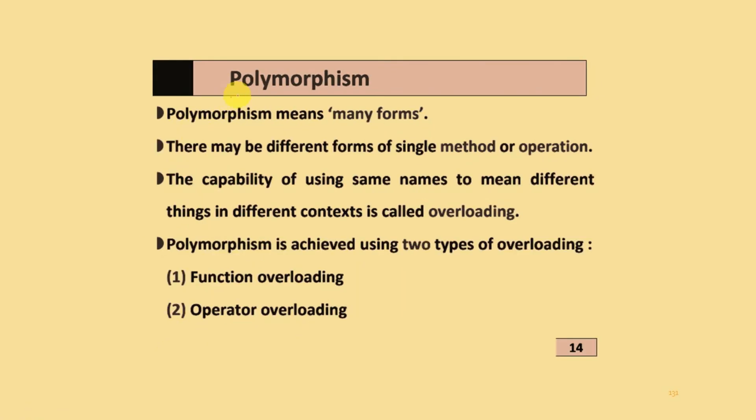What is polymorphism? It means many forms. There are different forms of a single method or operation. The capability of using the same name with different meanings in different contexts is called overloading. Polymorphism is achieved by using two types of overloading: function overloading and operator overloading.